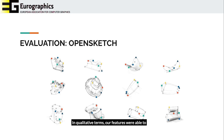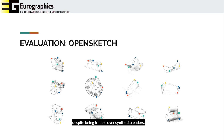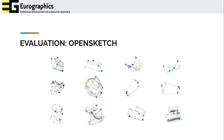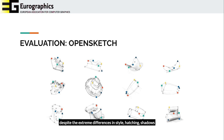In qualitative terms, our features were able to successfully correspond hand-drawn images in OpenSketch, despite being trained over synthetic renders. For each image pair, we highlighted five corresponding points distributed in different areas of the image. Overall, our learned descriptors managed to identify similar underlying local shapes, despite the extreme differences in style, hatching, shadow, construction lines, and camera positions.